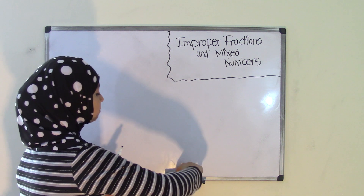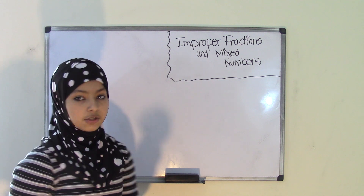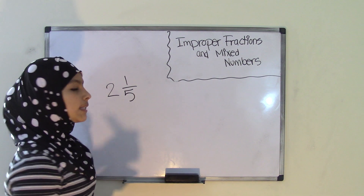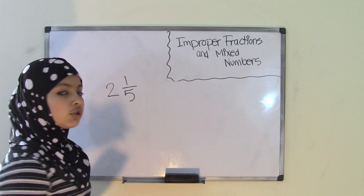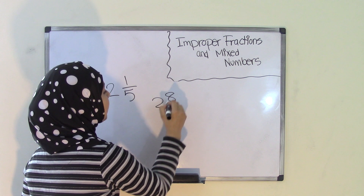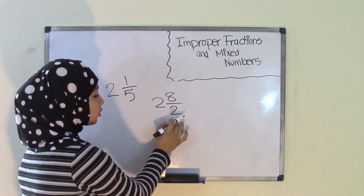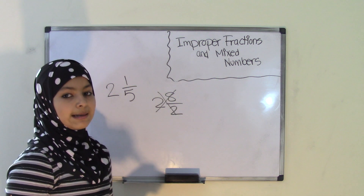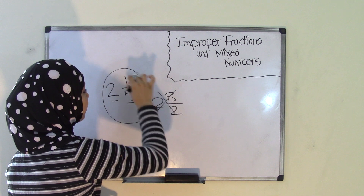Now what about a mixed number? A mixed number is just a combination of a whole number and a proper fraction. So let's say 2 and 1 fifths — this is an example of a mixed number because 2 is the whole number and your fraction is 1 fifths. Now you can never have an improper fraction inside a mixed number. That's why you can only have a whole number and a proper fraction to make a mixed number.